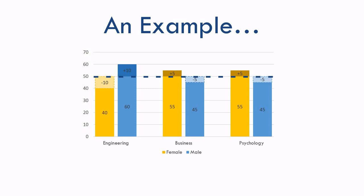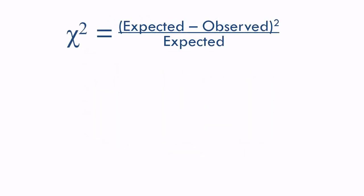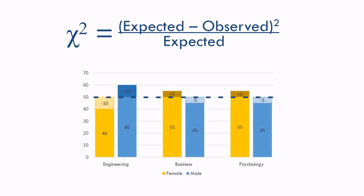And believe it or not, we now have everything we need to calculate the chi-square value. Thankfully the formula is really simple. All we do is take the differences from what we would expect, square it, and divide by the expected value. Let's take a look at our chart to see where these values come from.